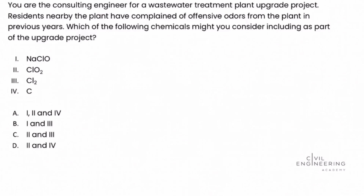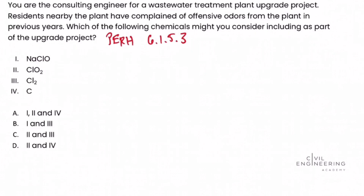In order to solve this problem we're going to turn to the PE reference handbook. At the time of this recording we're using version 1.2 of the handbook, and we're going to look specifically at section 6.1.5.3. In this section we see a table called 'Common Chemicals in Water and Wastewater Processing.' In this table we're given the name of the compound, its formula, the common application, as well as the molecular and equivalent weights of each.